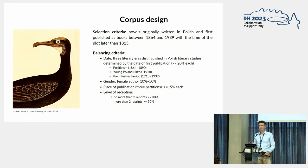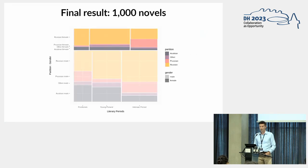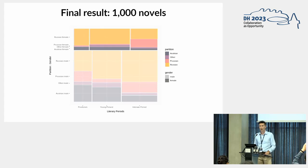A bit of historical background: there was no Poland on maps in the 18th century, which is important for our research because the territory was divided into three partitions — the Prussian partition, the Russian partition, and the Austrian partition. We included that element in our research and it is one of the metadata categories you may find in the corpus. The final result: we obtained 1000 novels, and this is the visualization of the balancing of that corpus.